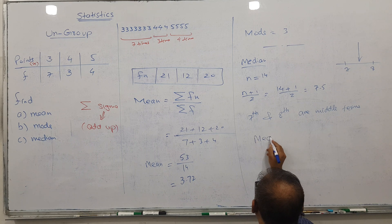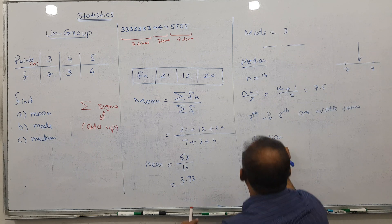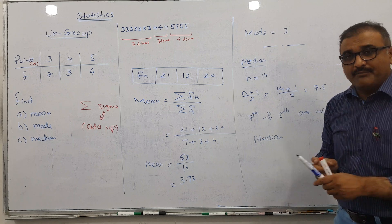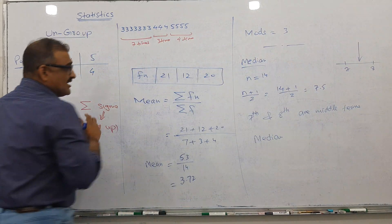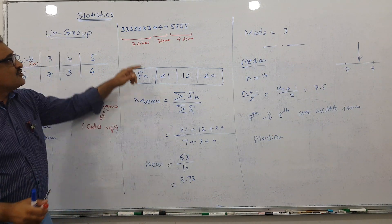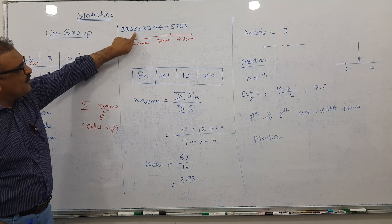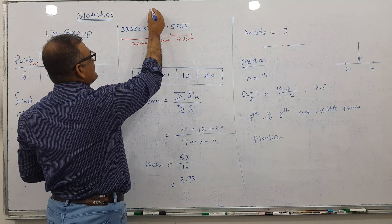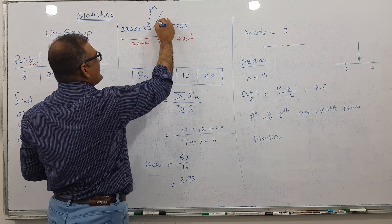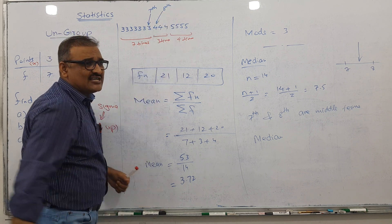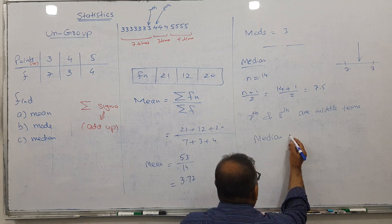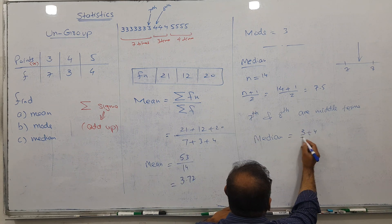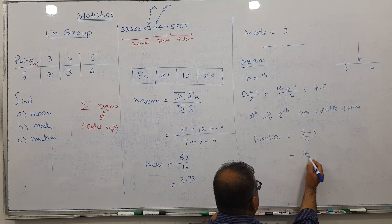The 7th term is 3 and the 8th term is 4. So the median is (3+4) divided by 2, which equals 7 divided by 2, giving us 3.5.